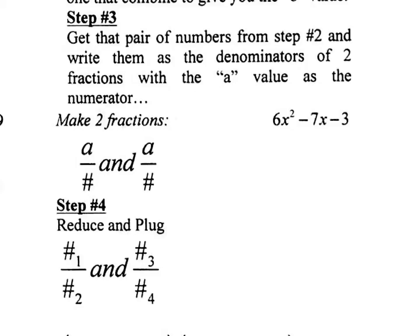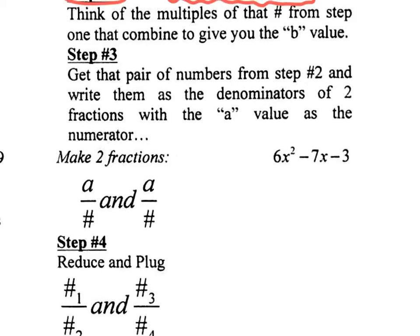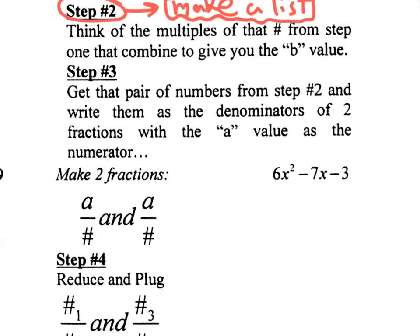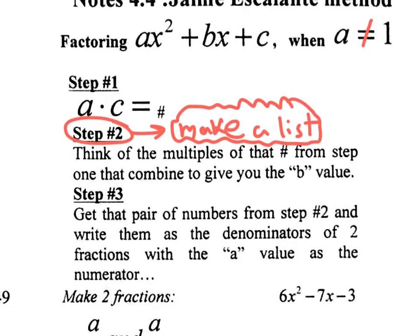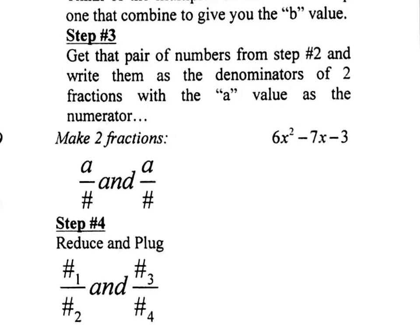You're probably thinking, what the heck is going on, right? All you've got to do is take the A value from up here, and you're going to write that as the numerator of two fractions, right here and here. And the pair of numbers from step 2 go as denominators. And step 3 is to make these two fractions, and step 4 is to simply reduce and plug it into your answer format.